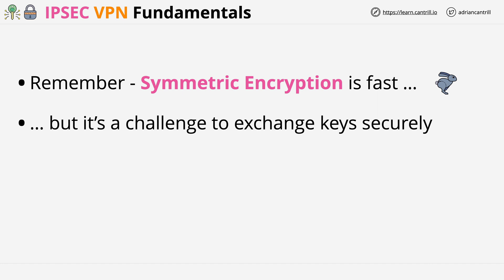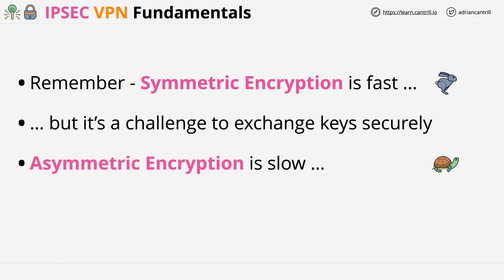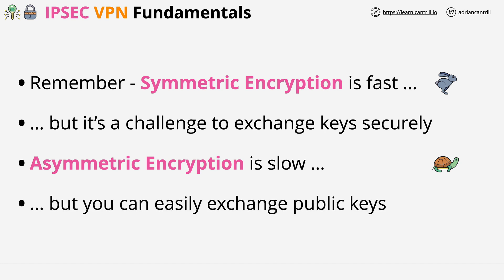That's why asymmetric encryption is really valuable. It's slower, so we don't want to use it all the time, but it makes exchanging keys really simple because different keys are used for encryption and decryption. A public key is used to encrypt data, and only the corresponding private key can decrypt it — meaning you can safely exchange the public key while keeping the private key private. The aim of most protocols is to start with asymmetric encryption, use this to securely exchange symmetric keys, and then use those for ongoing encryption. This will help you understand how IPsec VPN works.